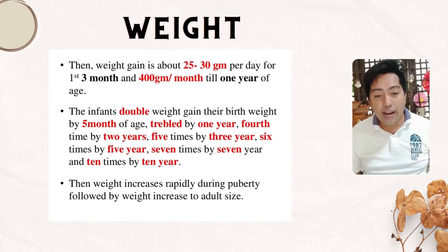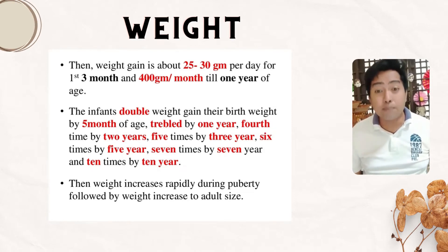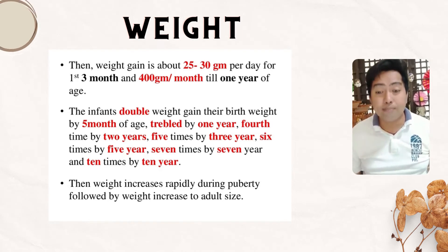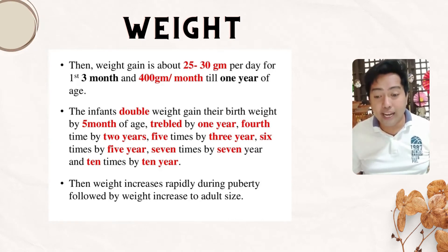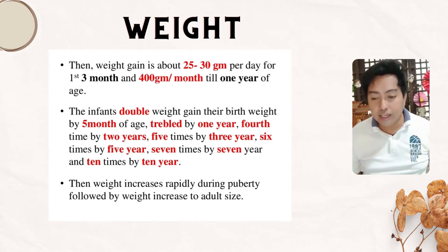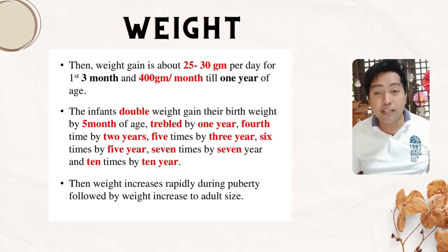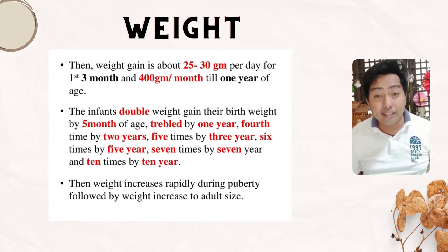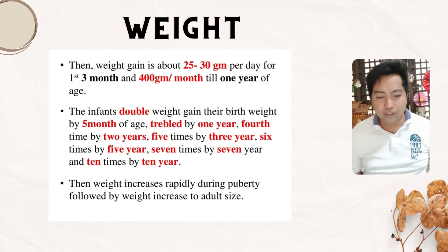Weight gain is about 25 to 30 grams per day for the first to 3 months, and 400 grams per month till 1 year of age. The infant can double their weight by 5 months of age, triple by 1 year, 4 times by 2 years, 5 times by 3 to 6 years, 7 times by 7 years, and 10 times by 10 years.